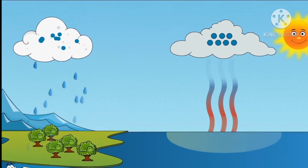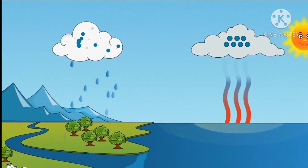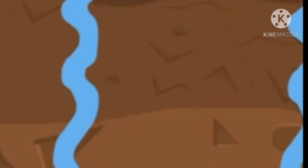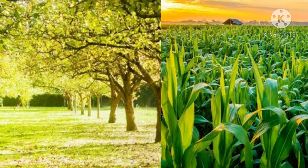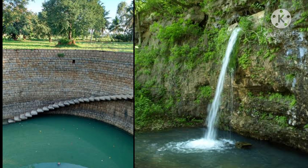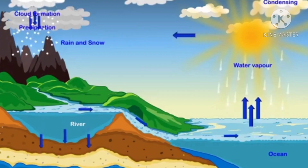Dear children, a part of rain water sinks into the ground, which plants and crops re-use for their growth, and some of it goes to wells or springs. Most of the rain water goes back to the rivers and seas.